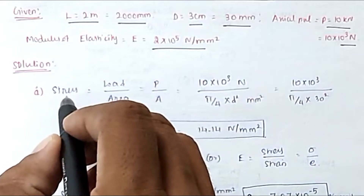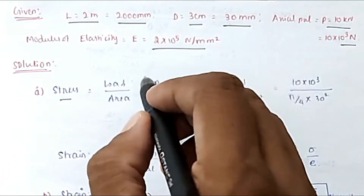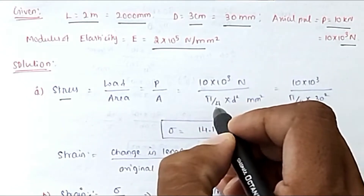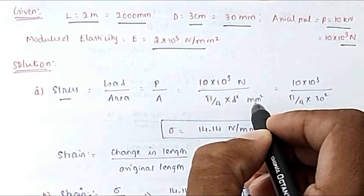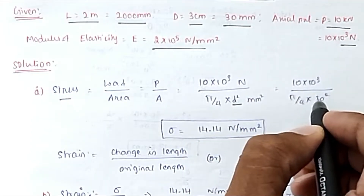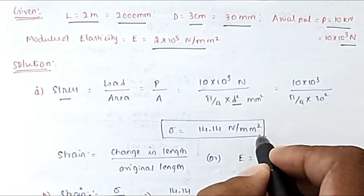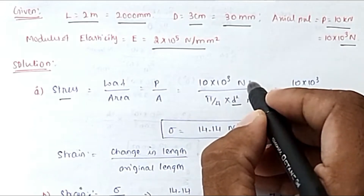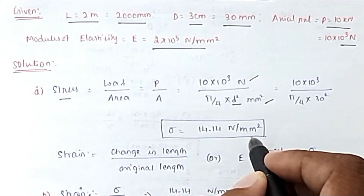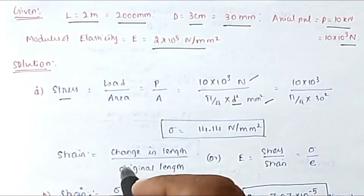Stress = Load / Area = P / A. The load is 10×10³ N divided by the area, which is (π/4) × d². With d = 30 mm, solving this gives stress = 14.14 N/mm². The load is in newtons and area in mm², so the unit is N/mm².